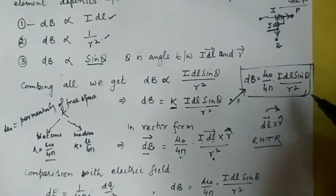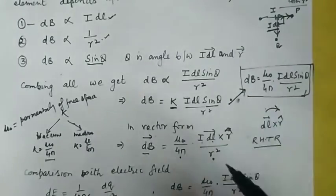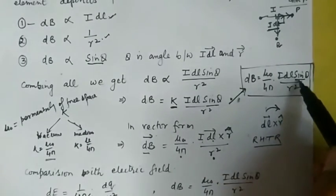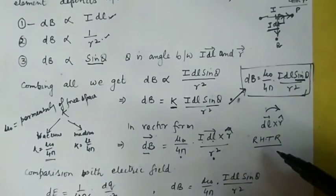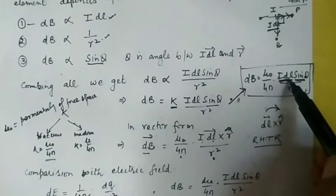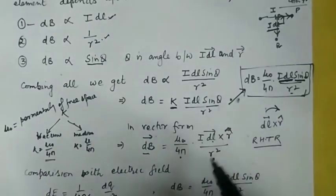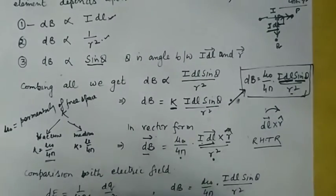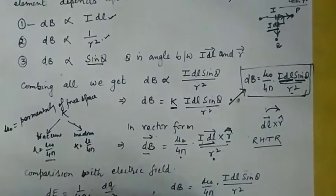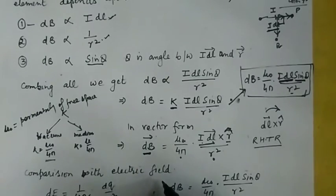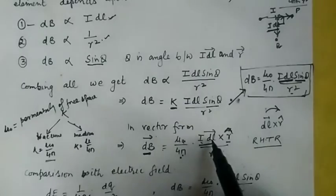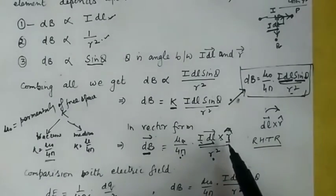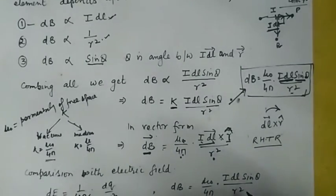Writing this formula in vector form: since sine theta appears, it must involve a cross product. Theta is the angle between idl and r, so we take the cross product of idl and r. Biot-Savart's law in vector form becomes: dB vector = (mu naught / 4pi) × idl cross r-hat divided by r squared, where r-hat is the unit vector.